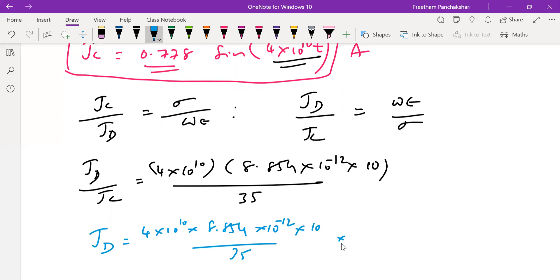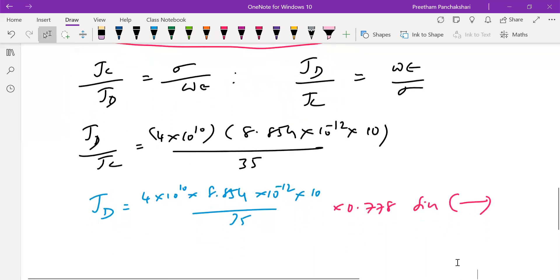Jc we shall take to the right side, and Jc is given by the previous census, that is 0.778 and sinusoidal term.